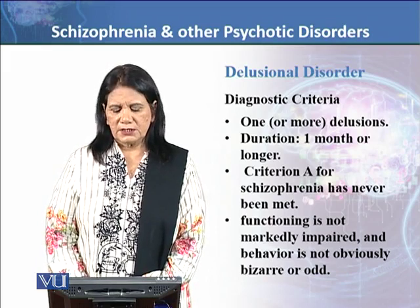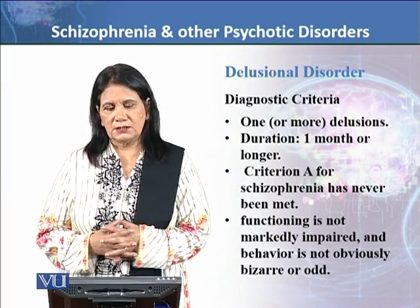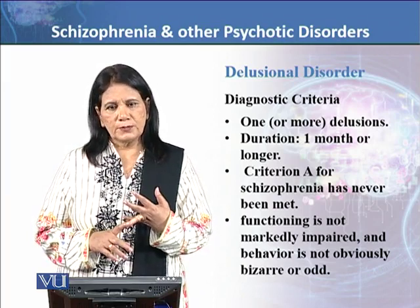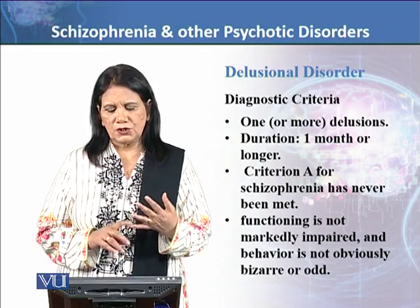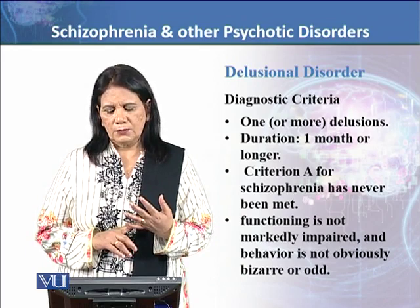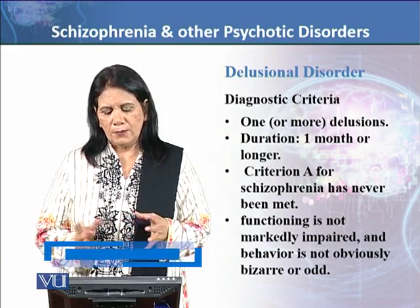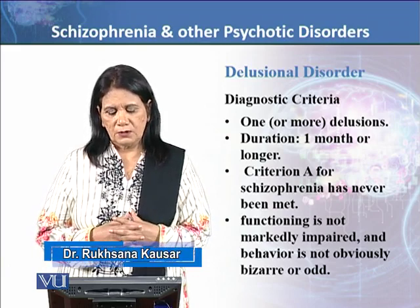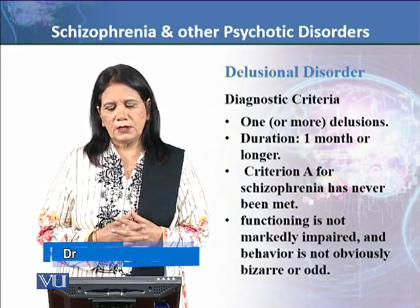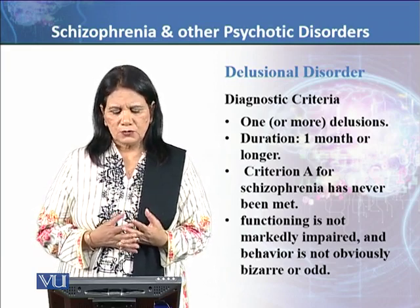The patient doesn't meet criteria for schizophrenia. For example, symptoms like hallucinations, delusions, disorganized speech, catatonic features, and negative symptoms are ruled out. Functioning is not markedly impaired except for the delusions, which are very systematic and well-organized. Other than that, grooming and general behavior are intact.